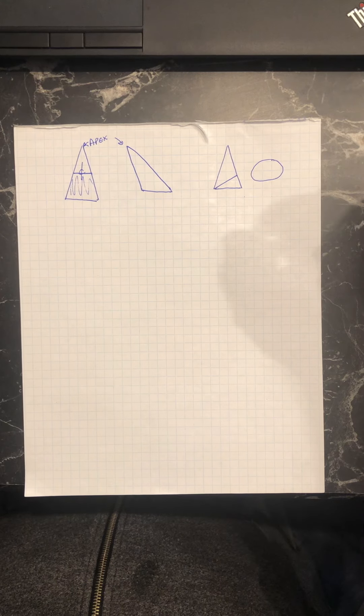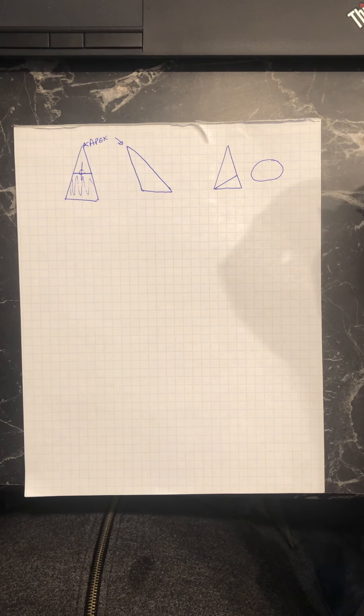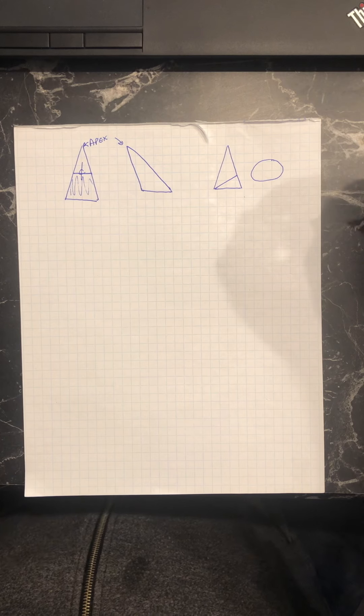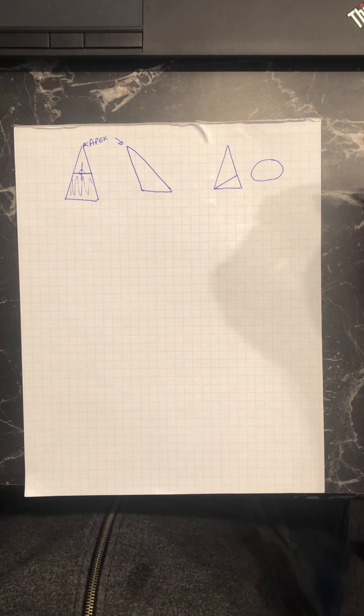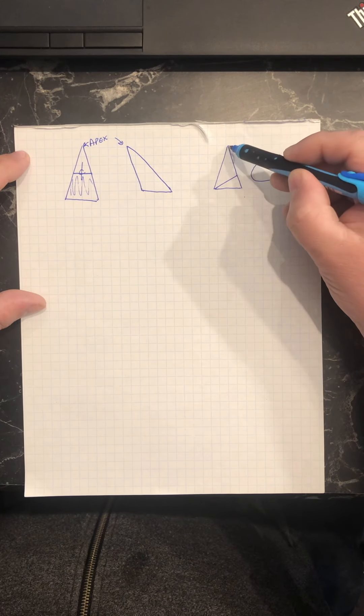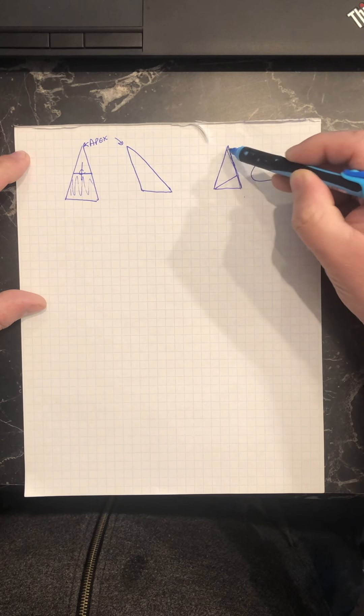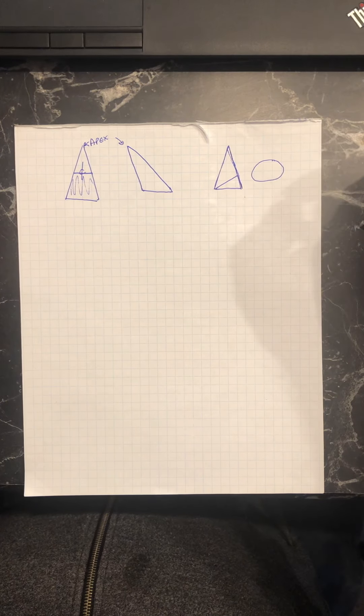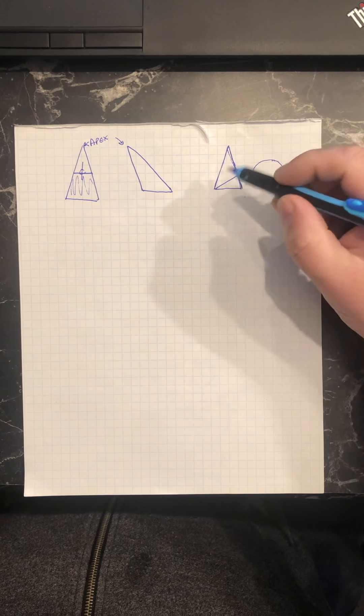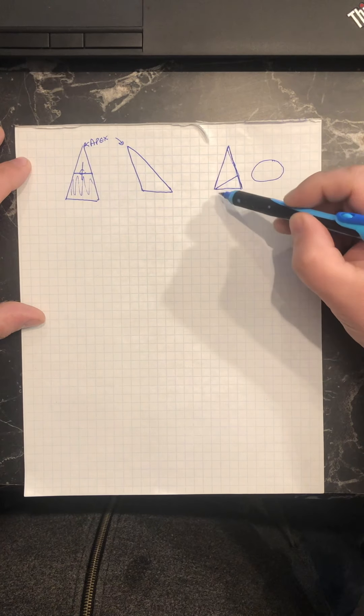Number five, where are the true lengths found on an elevation view of a cone? That's going to be on either side of the cone. So this length here, this length here, those are both true lengths. So there's only two of them on a cone and they're on either end.